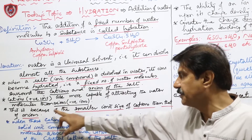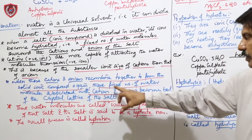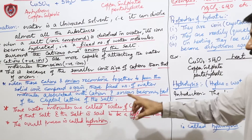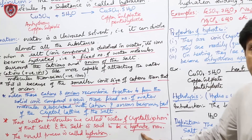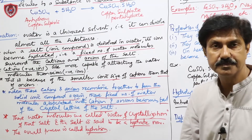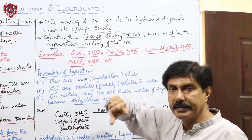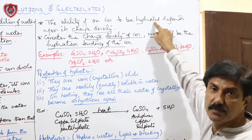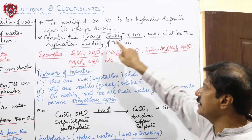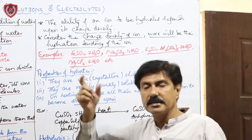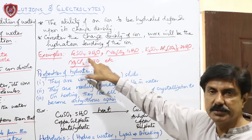جب cations اور anions مل کر دوبارہ ionic compound بناتے ہیں تو وہ water molecules جو ان ions کے ساتھ جڑے تھے وہ crystal lattice میں شامل ہو جاتے ہیں — جسے water of crystallization کہتے ہیں۔ اس عمل کو hydration کہتے ہیں اور یہ salt hydrate کہلاتا ہے۔ کسی بھی ion کی hydrate ہونے کی صلاحیت اس کی charge density پر depend کرتی ہے — charge density جتنی زیادہ، اتنے زیادہ water molecules جڑیں گے۔ Cations کی charge density زیادہ ہوتی ہے کیونکہ size میں چھوٹے ہوتے ہیں — tendency to be hydrated: greater۔